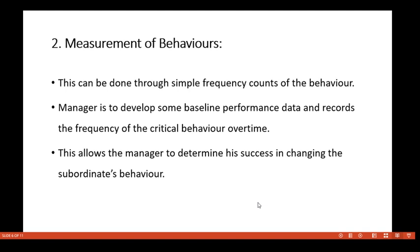The second step is measuring the behavior. After identifying critical behaviors, you have to measure them — that is, see what the consequences and effects are for those desirable and undesirable behaviors. This can be done through simple frequency counts of behavior: how frequently you or others have behaved in the same manner and what the effect was. The manager develops baseline performance data and records and observes the frequency of critical behavior over time, which acts as a basis for measurement for every individual.